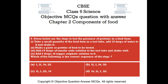Question number 6. Given below are the steps to test the presence of proteins in a food item: 1. Take a small quantity of the food item in a test tube, add 10 drops of water to it and shake it. 2. Make a paste or powder of the food to be tested. 3. Add 10 drops of caustic soda solution to the test tube and shake well. 4. Add 2 drops of copper sulfate solution to it. Which of the following is the correct sequence of the steps? Option A: 1,2,4,3. Option B: 2,1,4,3. Option C: 2,1,3,4. Option D: 4,2,1,3.